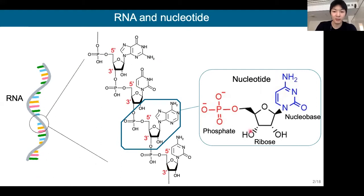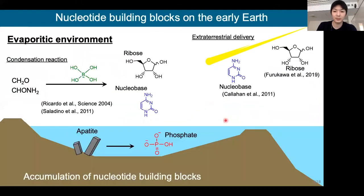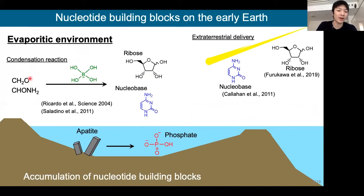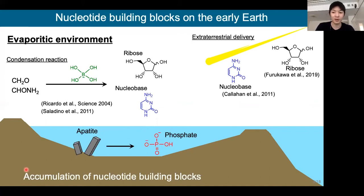The nucleotide consists of three components: ribose, nucleobase, and phosphate. These components probably existed on the early Earth, particularly in evaporitic environments. Ribose and nucleobase would have formed by condensation reactions of small molecules such as formaldehyde and formamide. Some researchers also found these molecules in carbonaceous chondrite. Phosphate would have been contained in phosphate minerals such as apatite, and evaporation could condense these molecules. So the borate-rich evaporitic environments could have accumulated the building blocks of nucleotide.